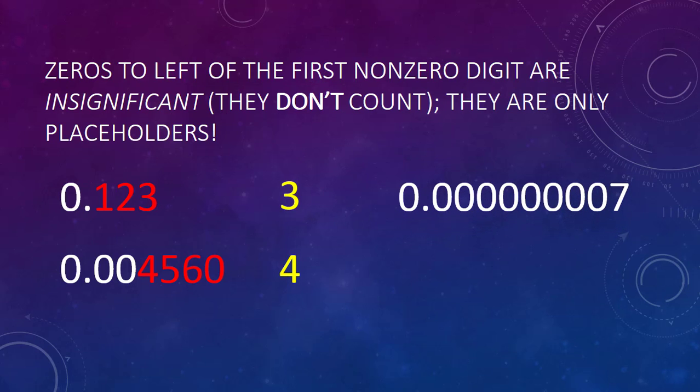Now all of these zeros are to the left of the first non-zero number, so none of those zeros are significant. The only digit in this number that is significant is going to be the seven.